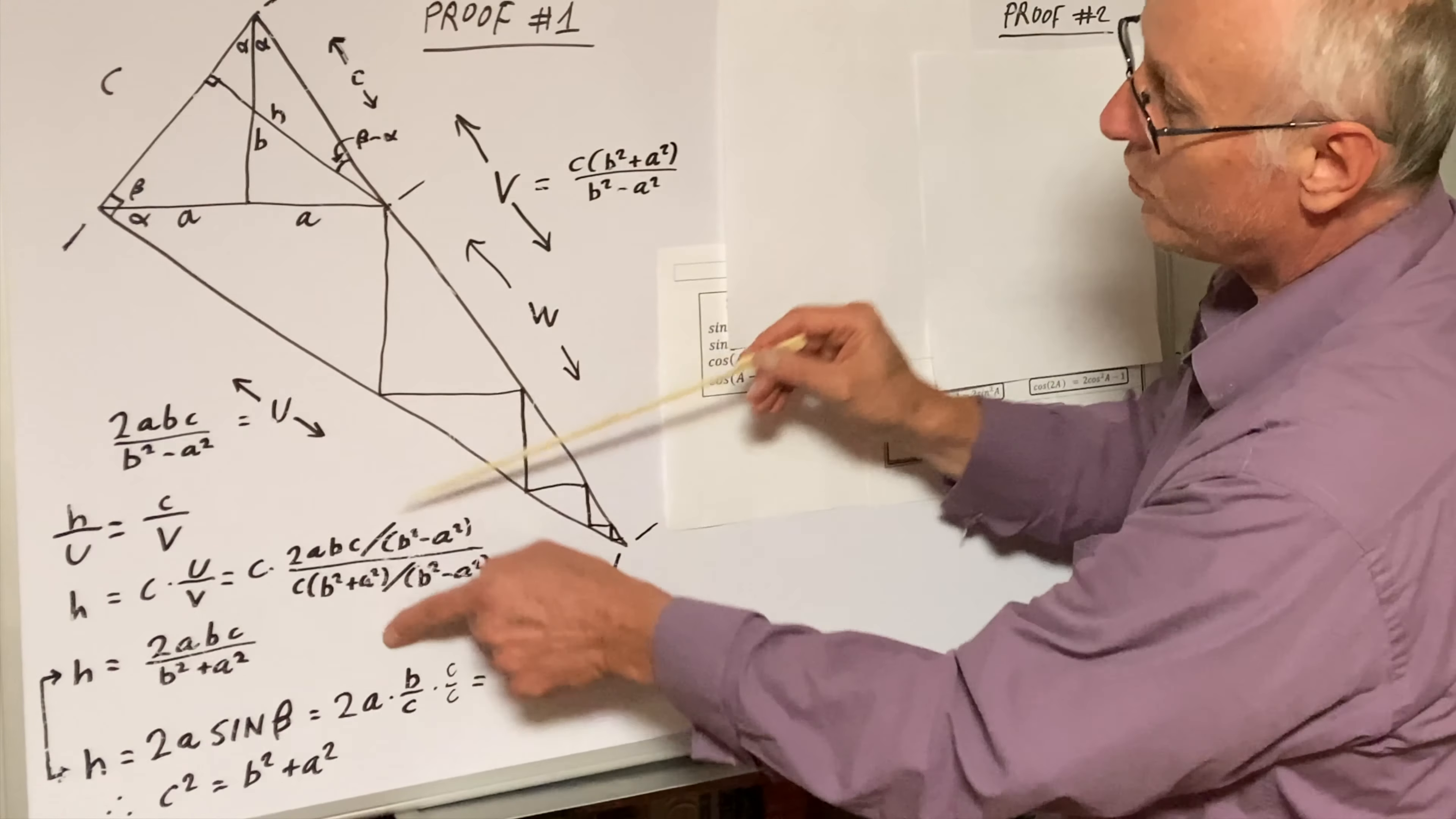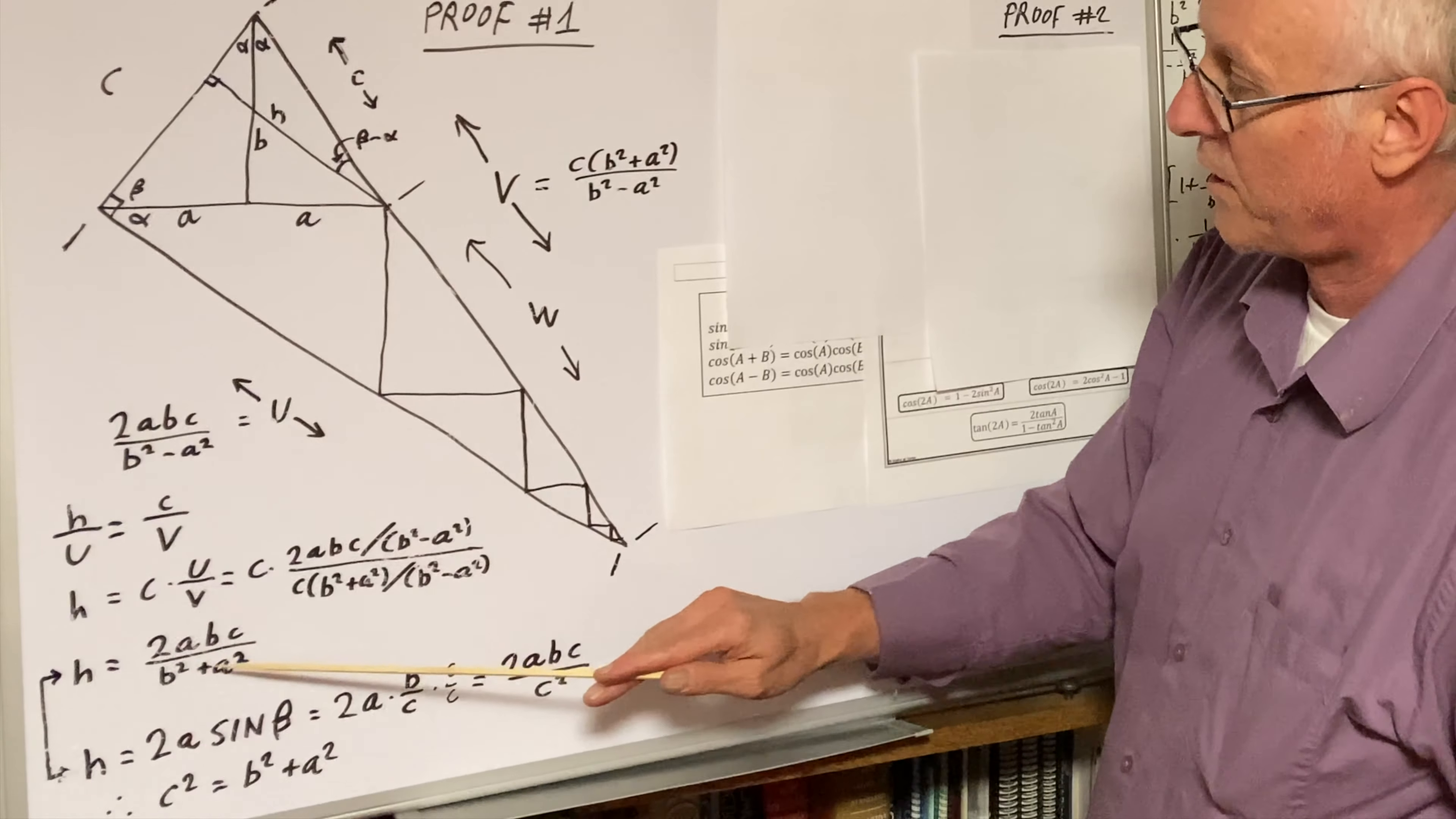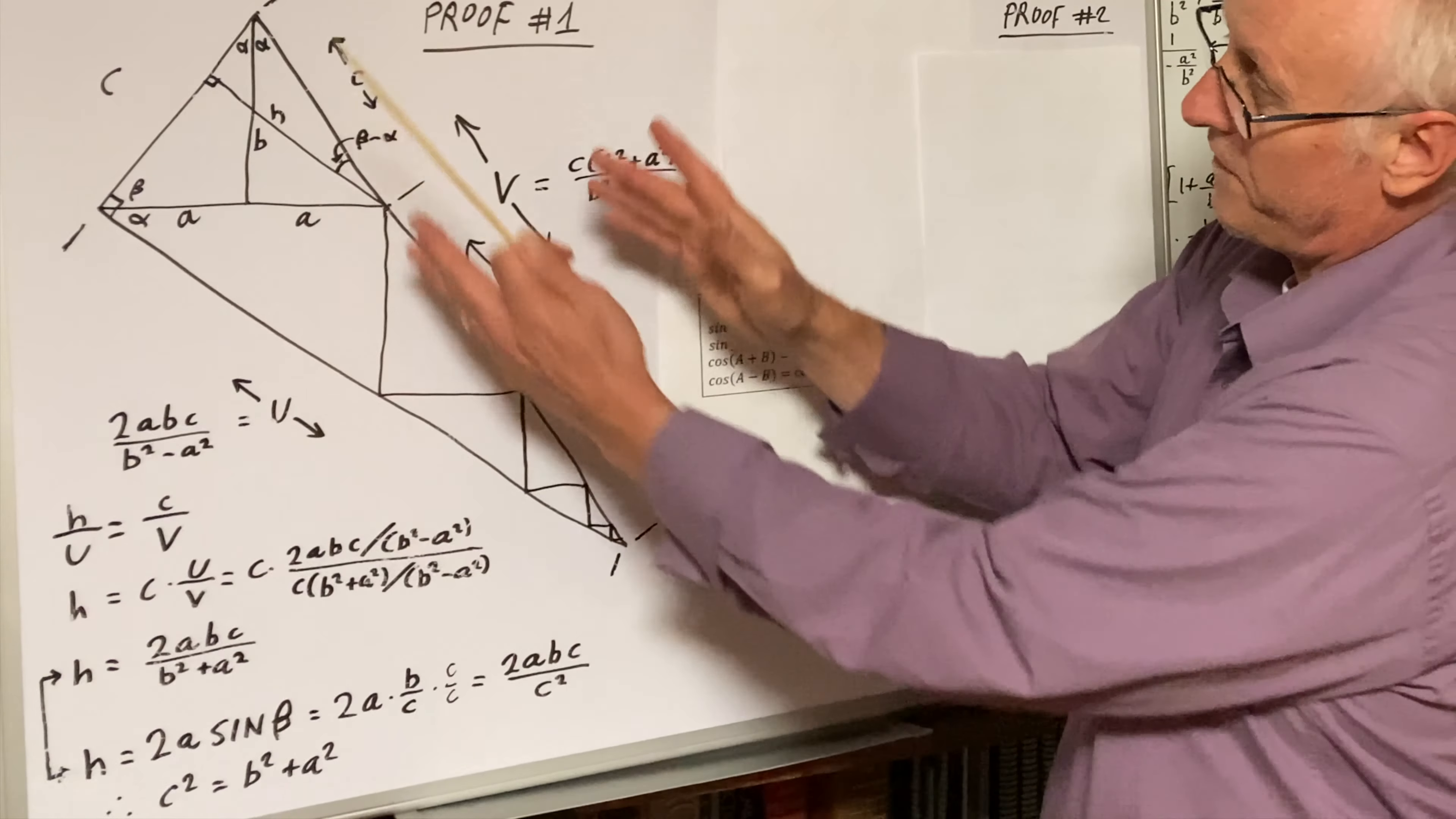That looks pretty messy, but these factors cancel out. You're left with 2abc over B squared plus A squared. Pretty simple. That's looking at it from this UV point of view.